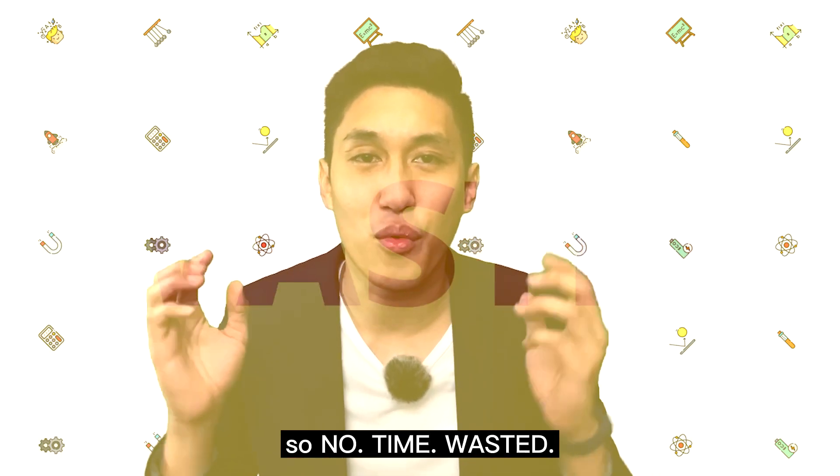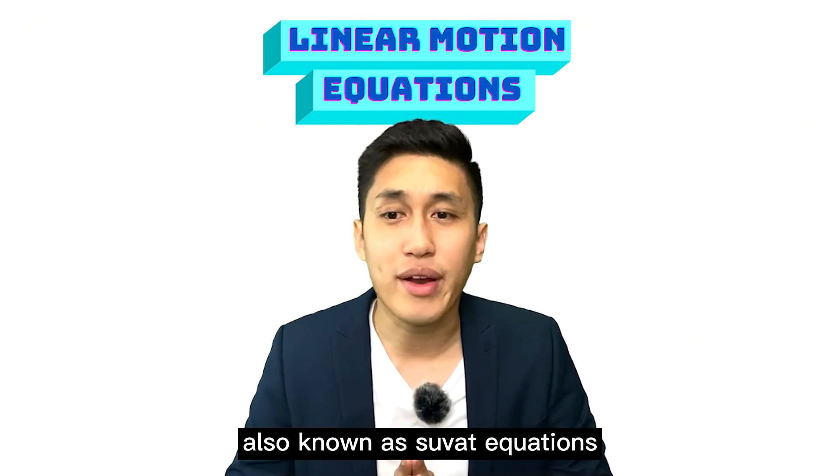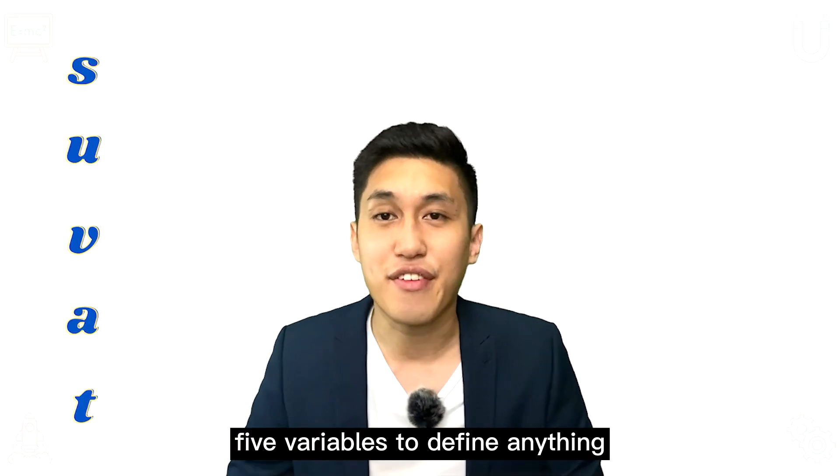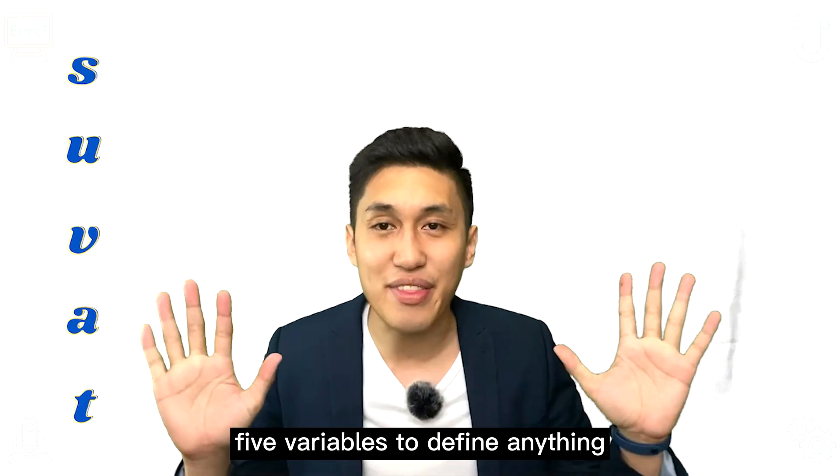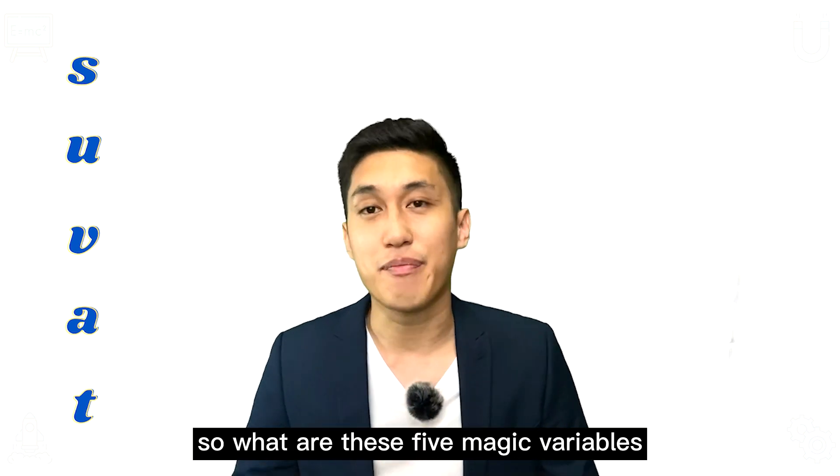So no time wasted. Today's video is about linear motion equations, also known as SUVAT equations, because it only uses these 5 variables to define anything moving in a straight line. So what are these 5 magic variables?